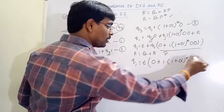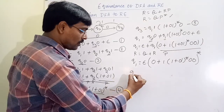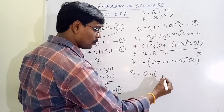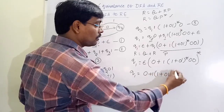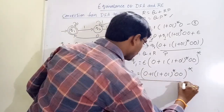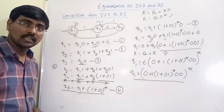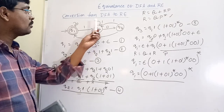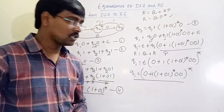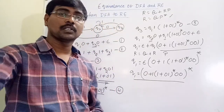Applying Arden's theorem: Q1 = ε·P* = P*. So the final answer is (0 + 1·(1 + 01)*·00)*. This is the regular expression. Since Q1 is the final state, the answer present in Q1 is our regular expression. This is how to convert a DFA into a regular expression. In the next session we will discuss one more example. Thank you.